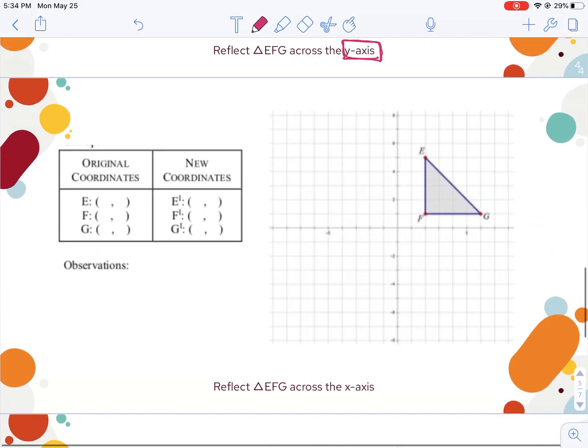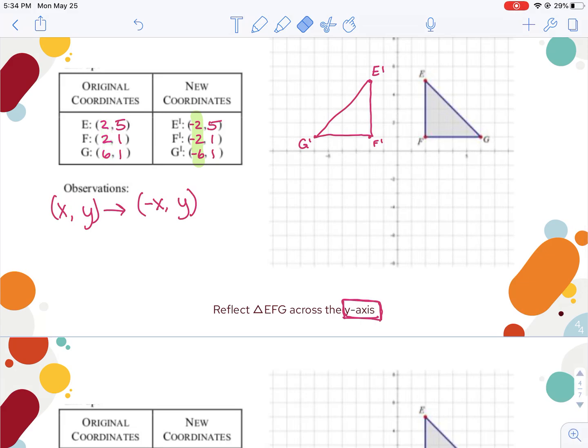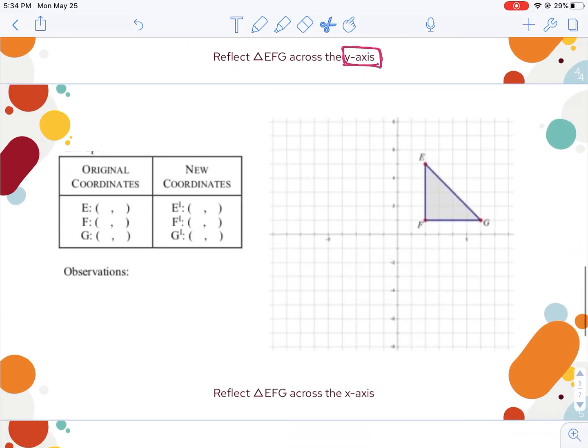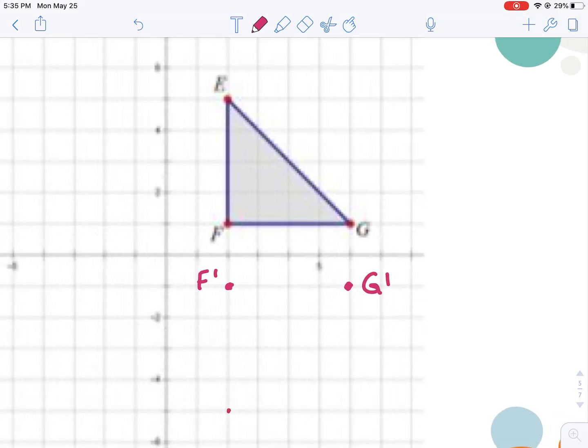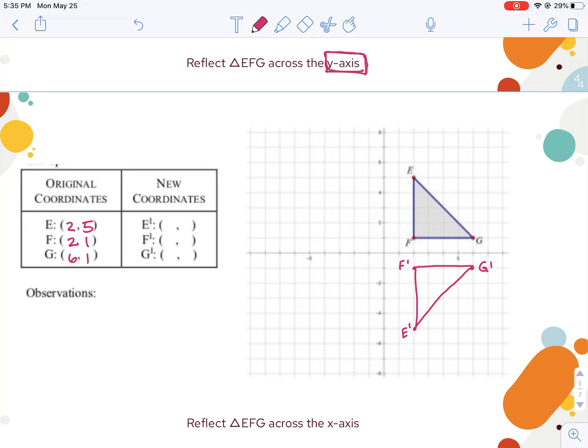We'll do the same thing with the X axis now. This time, F prime lands right here, G prime lands right there, and E prime will land down here. So E prime is at positive 2 for my X, negative 5 for my Y value. F is also still at positive 2 for its X, negative 1 for Y. And G is at positive 6 for my X value, and negative 1 for my Y value.